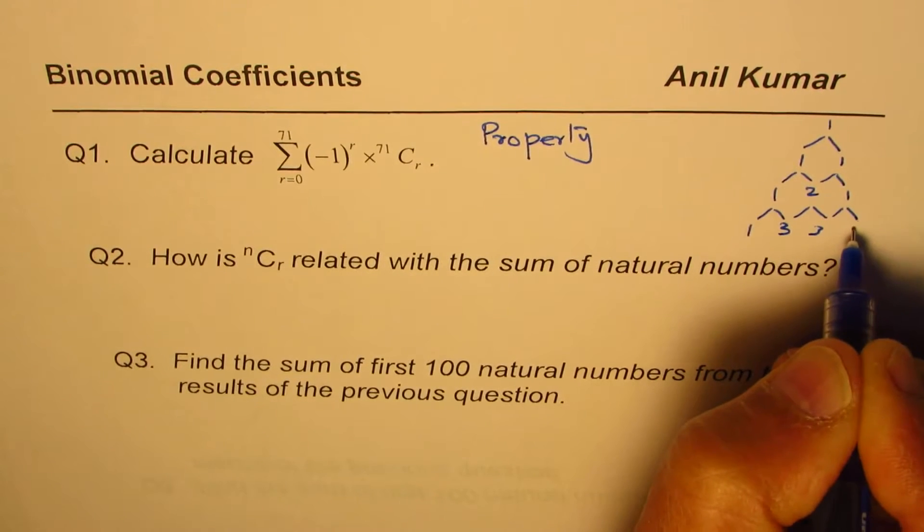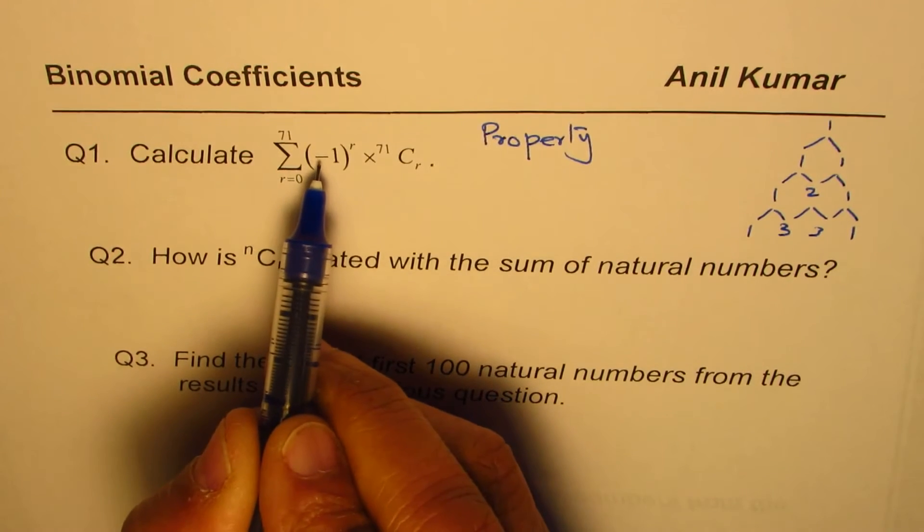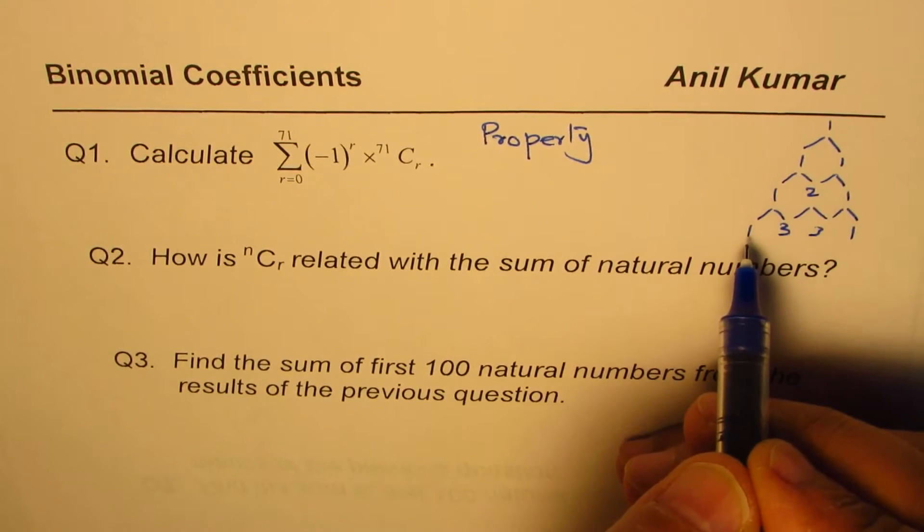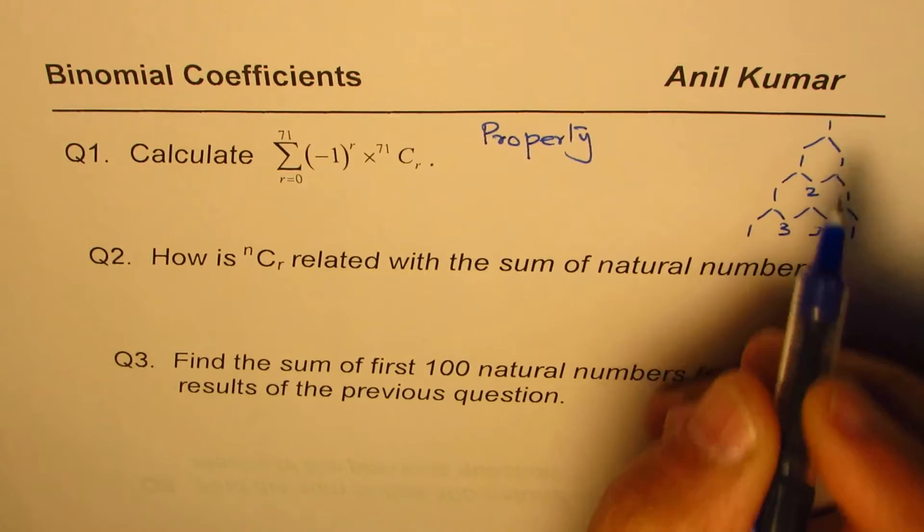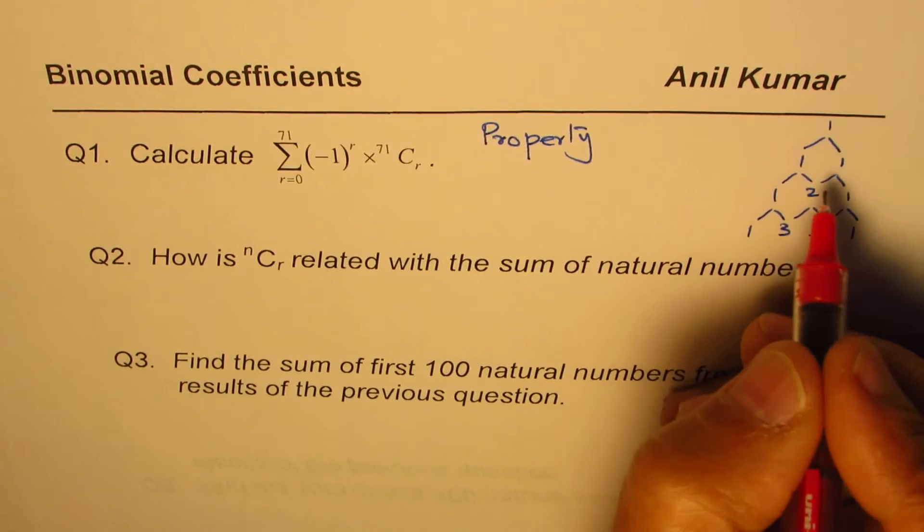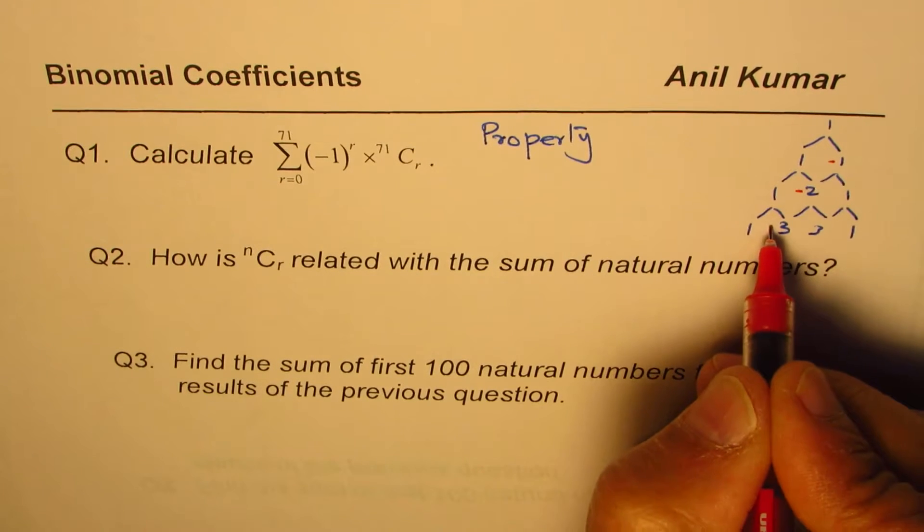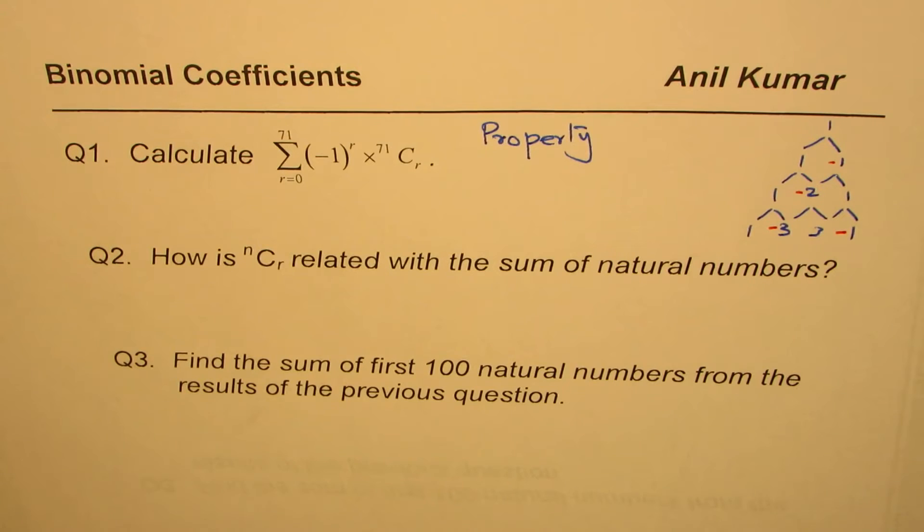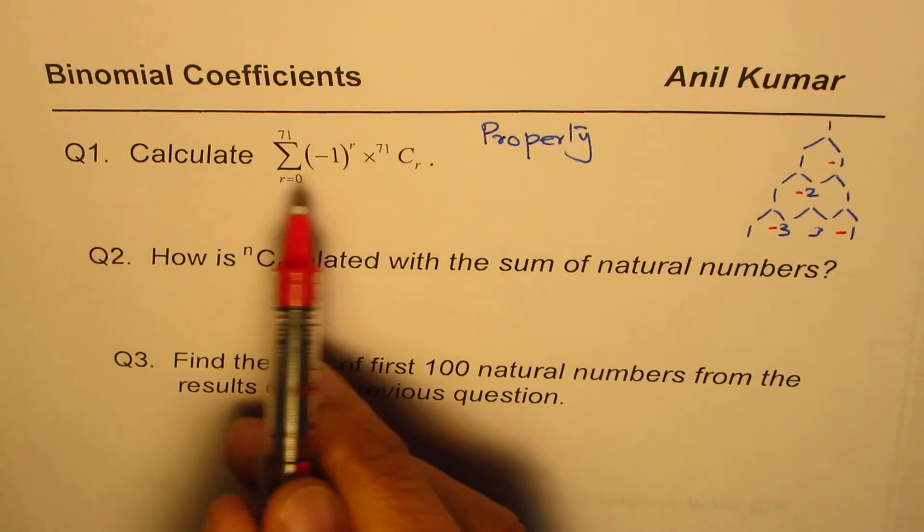1, 1, 1, 2, 1, 1, 3, 3, 1. So when we multiply by minus 1 to the power of R, this is the zeroth row, they will remain positive. The first row terms will become negative. So let me just make them negative. One. Second row will remain positive. The third will become negative.